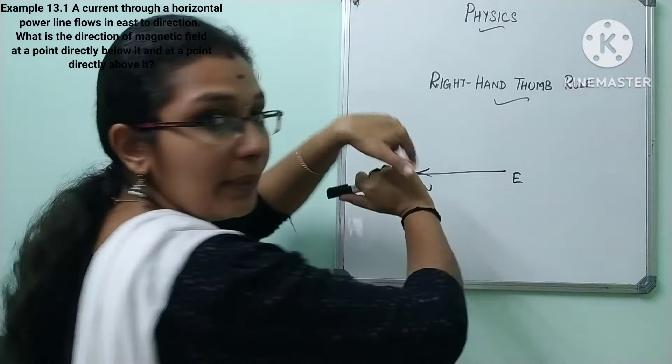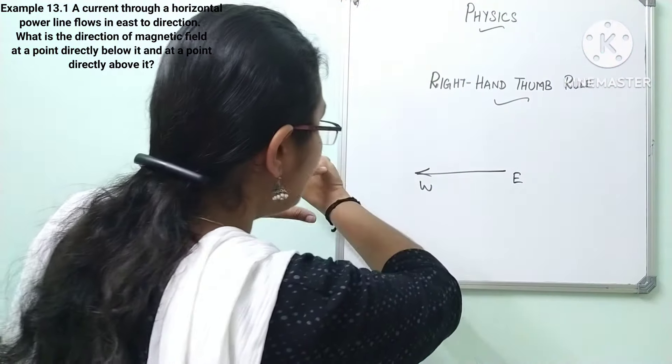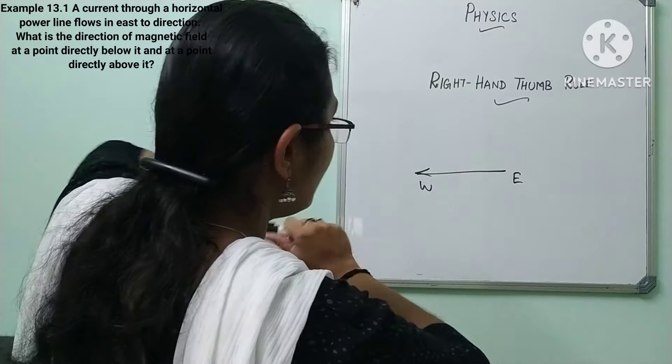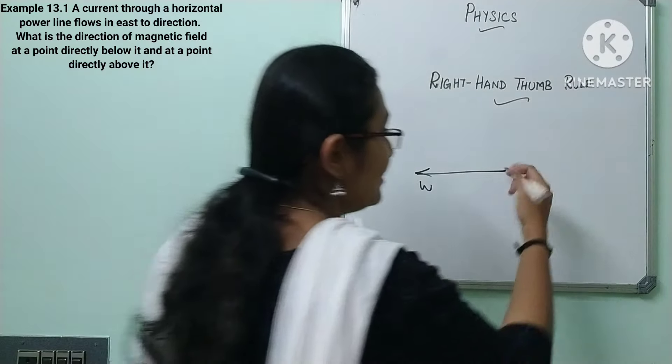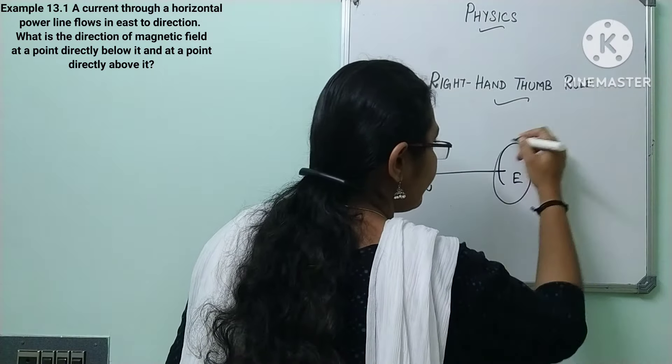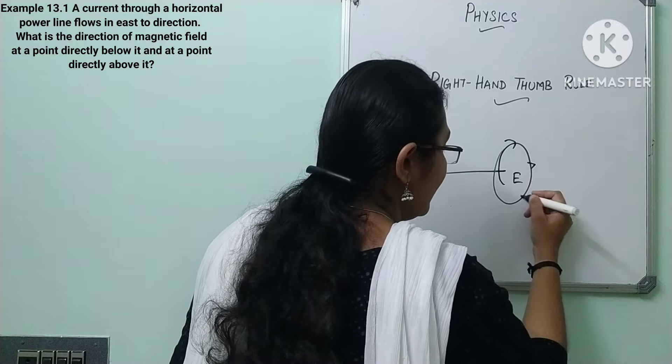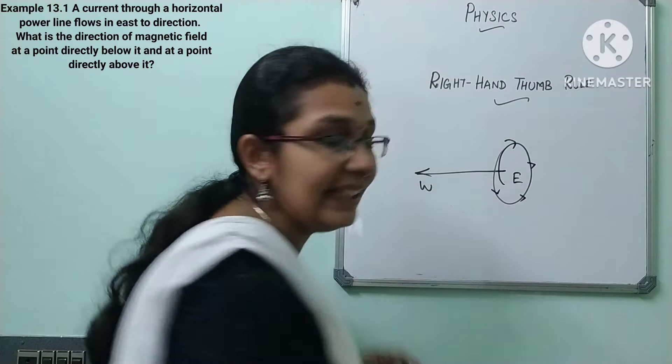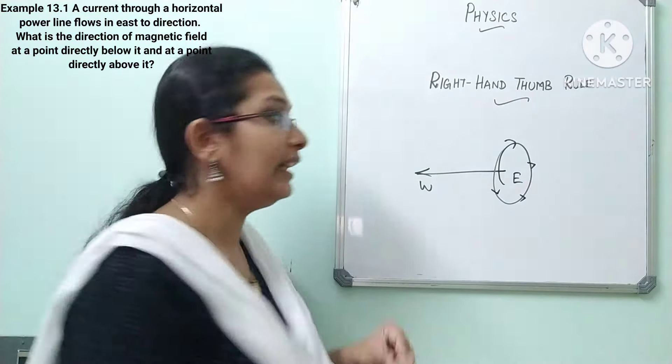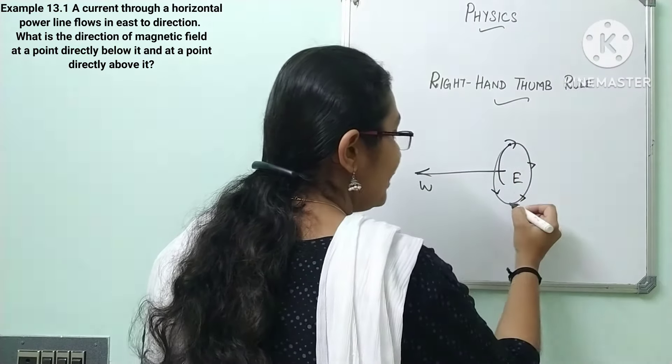So when you view it from this end, what is happening? Like this it is flowing. So it is in clockwise direction. It is flowing like this. So when viewed from east end it is flowing in clockwise direction irrespective of the point.